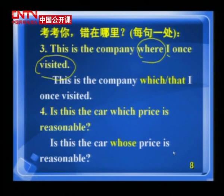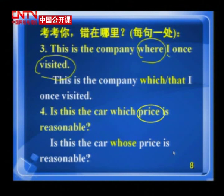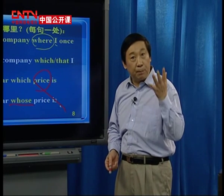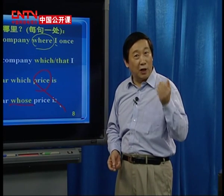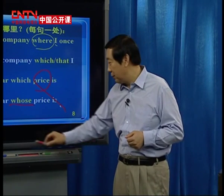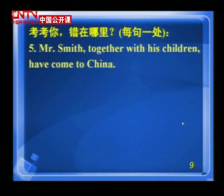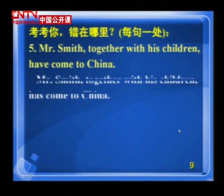Which 或 that 在句子中间只能做主语和宾语。这里主语是 price，所以这个关系词应该做定语，要把它弄清楚。第五题：Mr. Smith together with his children have come to China. 错在哪？应该是 has come to China。